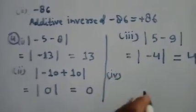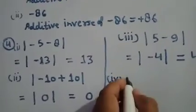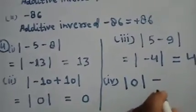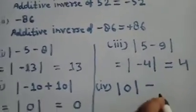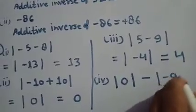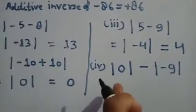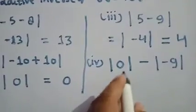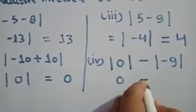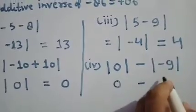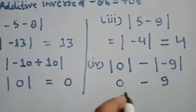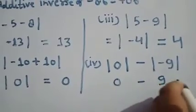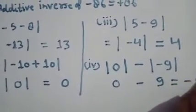Part number 4 is different — there are separate absolute value symbols and then a subtraction. The absolute value of 0 is 0; put a minus sign, and the absolute value of minus 9 is 9. Now subtract 9 from 0, and you get minus 9.